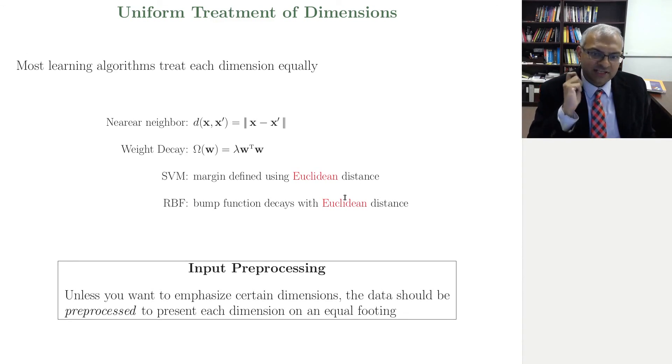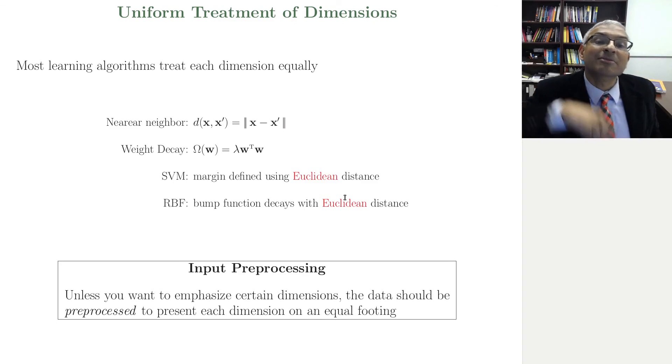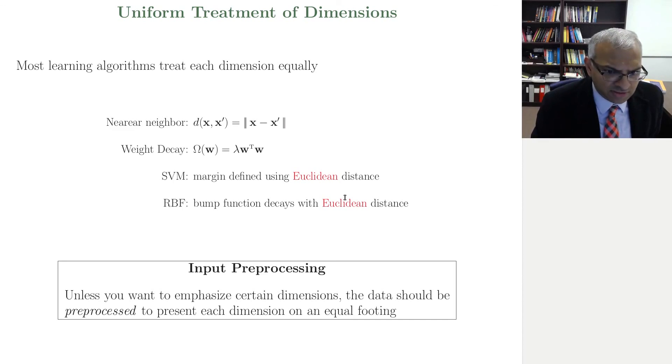Unless you want to emphasize certain dimensions, the data should be preprocessed so that it presents each dimension on an equal footing to the algorithm because the algorithm is expecting that. The algorithm operates on that assumption. With that, let's talk about some basic preprocessing transforms of the data, basic input preprocessing. Then we'll talk about PCA, which is a slightly more sophisticated input preprocessing.